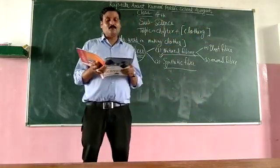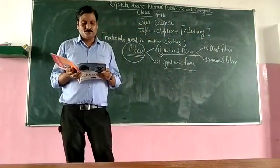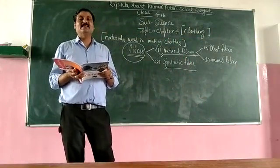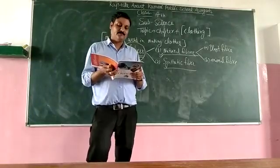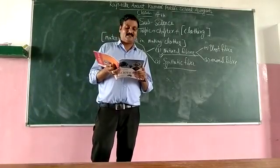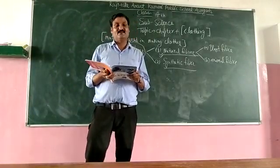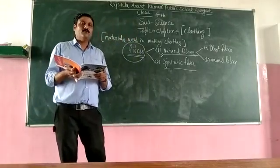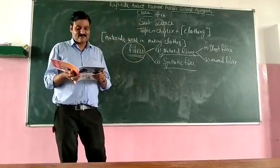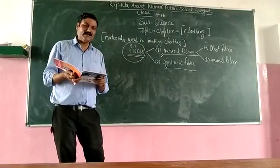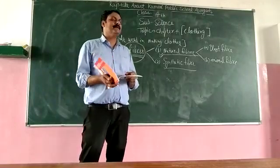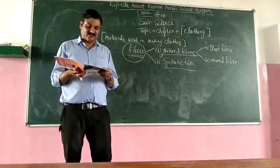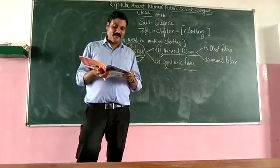We get fibers like cotton, jute, hemp, and oil from plants. These are called plant fibers. We also get fibers like wool and silk from animals. These are called animal fibers.